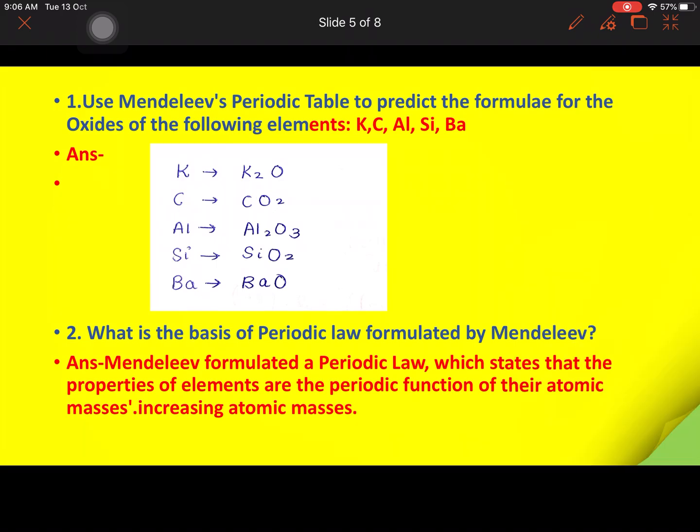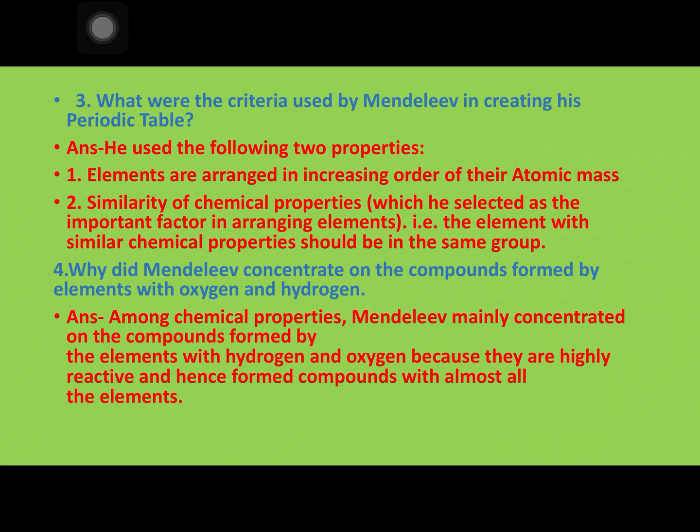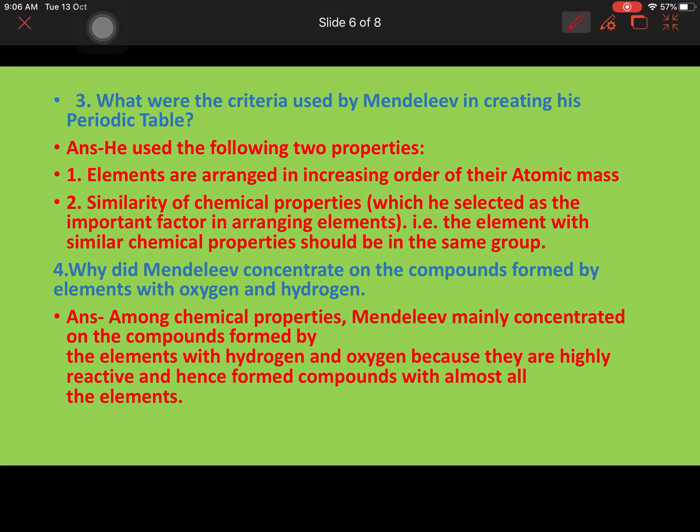Next is: what were the criteria used by Mendeleev in creating his periodic table? He used two main points: 1. Elements are arranged in increasing order of their atomic mass. 2. Similarity of chemical properties, which he selected as the important factor in arranging elements, i.e., elements with similar chemical properties should be in the same group.